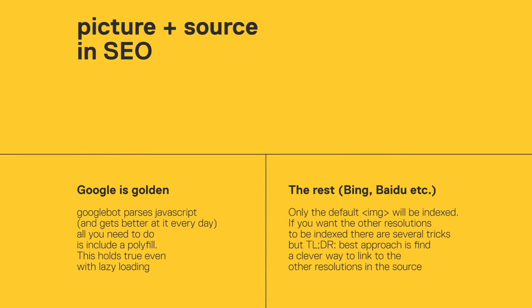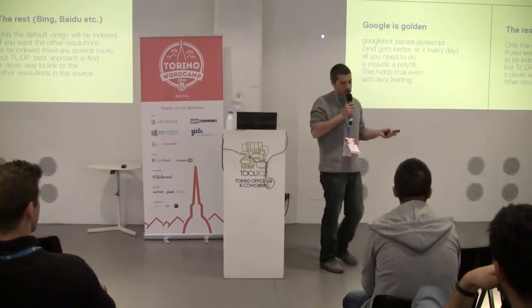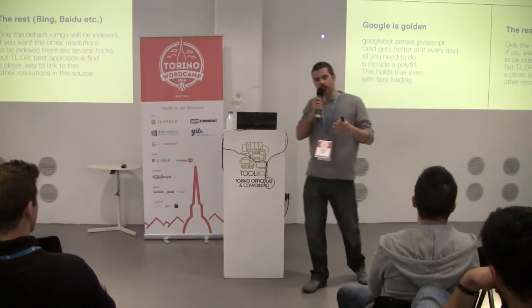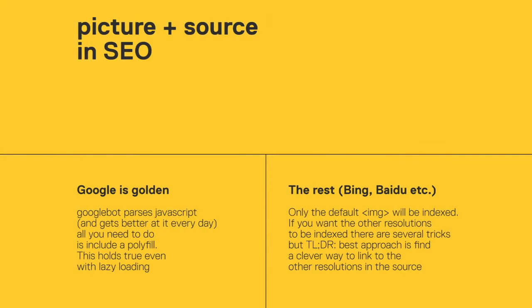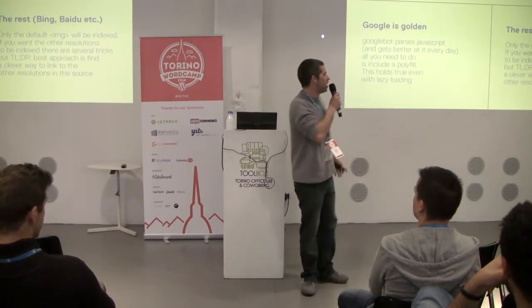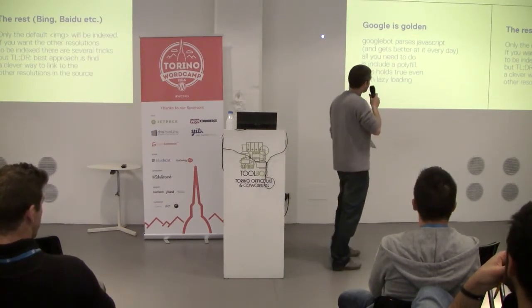You might be thinking: what about SEO? If the browser doesn't fully understand picture yet, what about the bots? The bots don't fully understand it either, but Google parses JavaScript — so once you include the polyfill to make it work for the browser, it works for the Google bot as well. Your images marked up as picture and source will be found and indexed, and this is true even if you use lazy loading, because your lazy loading JavaScript will also be parsed. For other less sophisticated search engine bots, you'll just need to find a clever way to include other resolutions in the source.